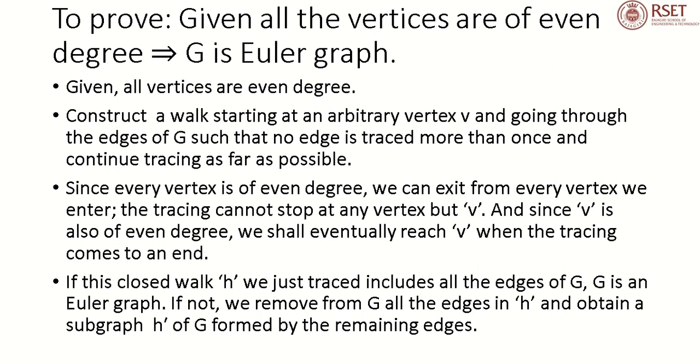Next, the converse part. Given all vertices are of even degree, we have to prove that G is an Euler Graph. Given all vertices are of even degree, we construct a walk starting at an arbitrary vertex V and going through the edges of G, such that no edge is traced more than once and continue tracing as far as possible. Since every vertex is of even degree, we can exit from every vertex we enter. The tracing cannot stop at any vertex but V.